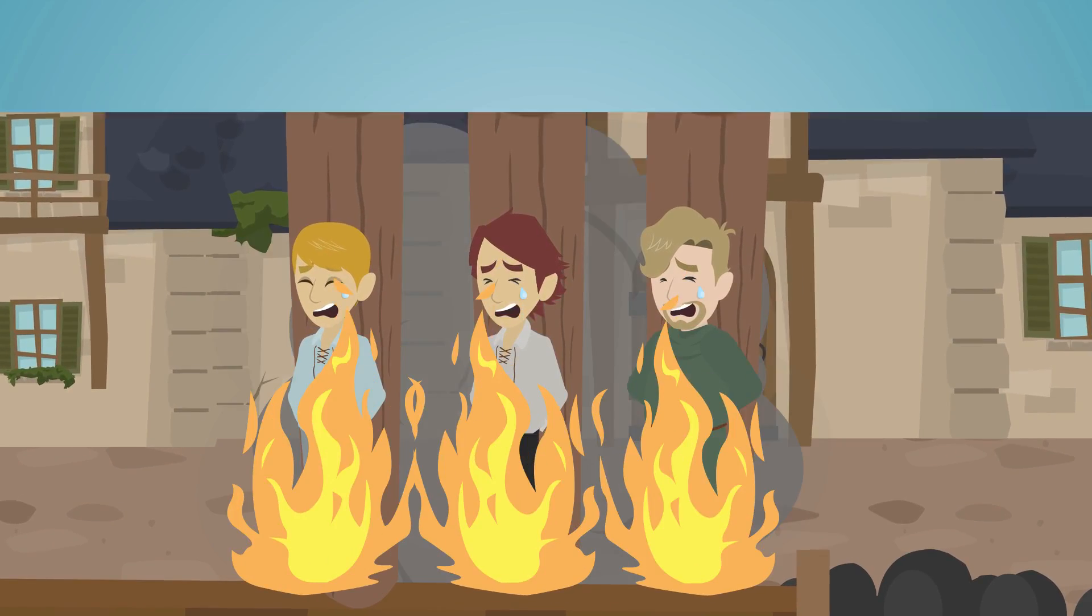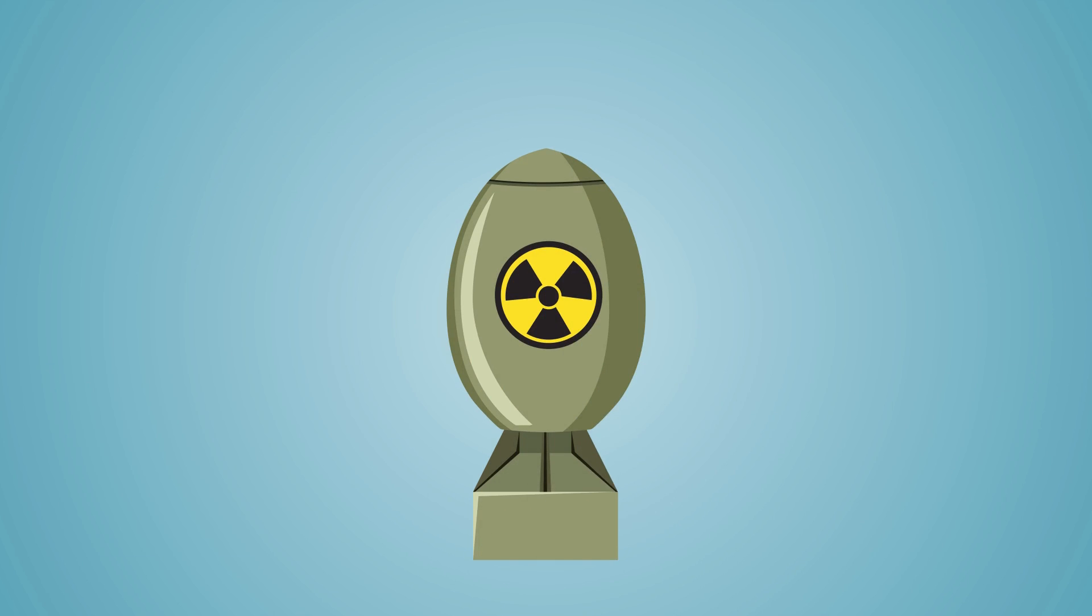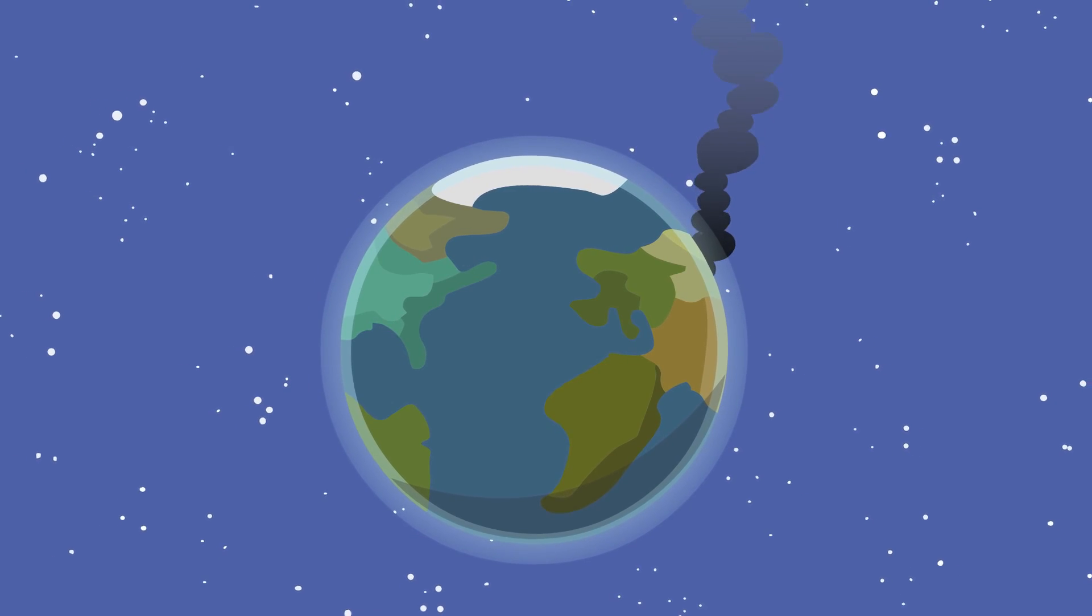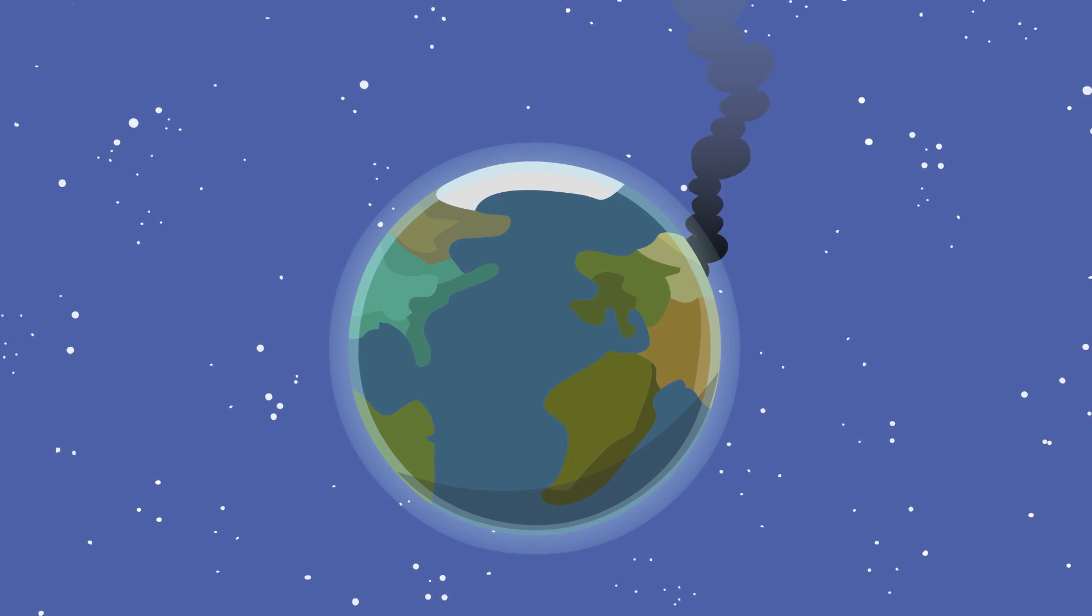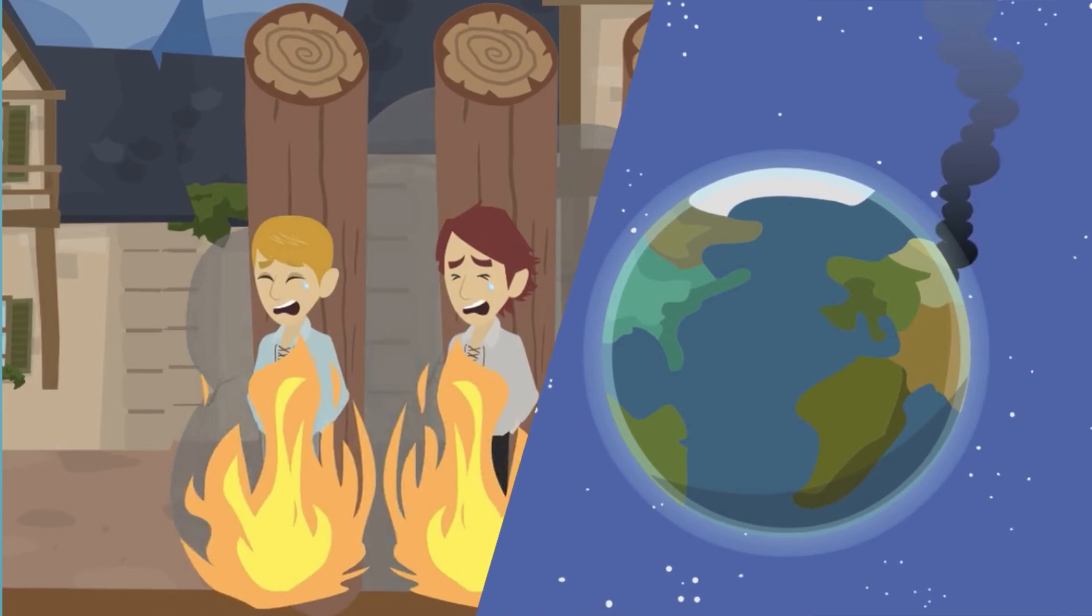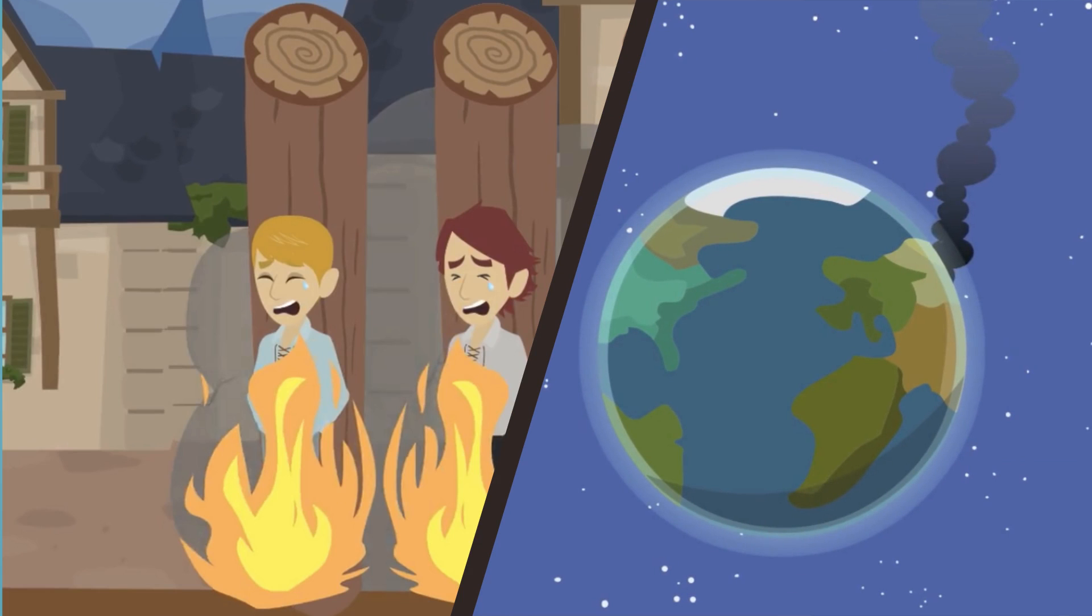An example of too much science is the development of the atomic bomb in World War II. Scientists worked on the development of this weapon which killed and severely injured hundreds of thousands of people. In both cases, a healthy balance between science and religion was lacking.